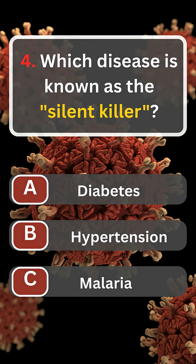Question number four. Which disease is known as the silent killer? A. Diabetes. B. Hypertension. C. Malaria.